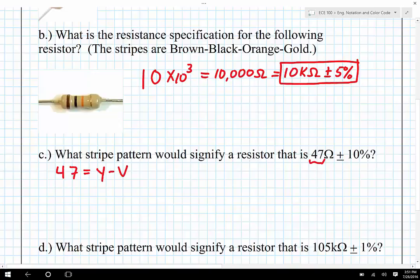And then this is going to be multiplied by 10 to the zero power, because it's 47, there's no multiplication necessary, so 10 to the zero power. So 10 to the zero power, remember that zero corresponded to black.